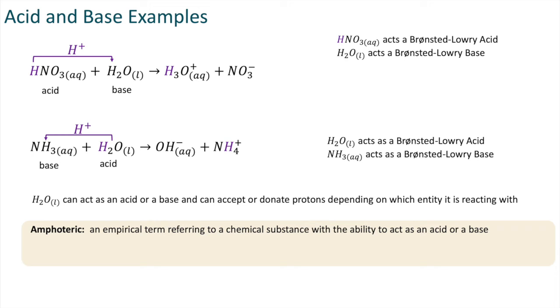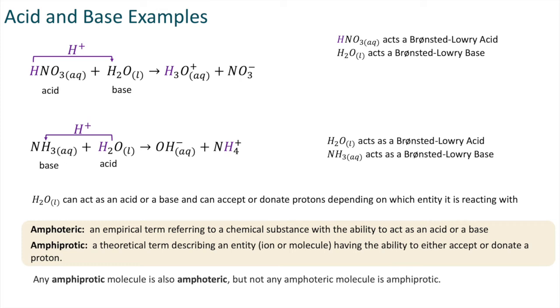Amphiprotic species is a theoretical term defining any entity, ion or molecule that has the ability to either accept or donate protons. It's important to note that any amphiprotic molecule is also amphoteric but not any amphoteric molecule is amphiprotic.